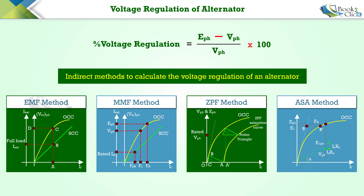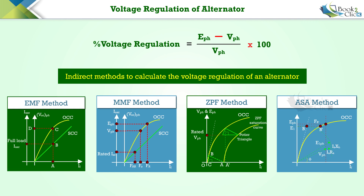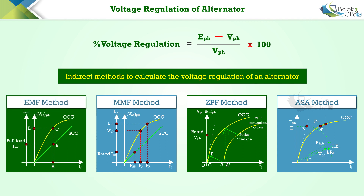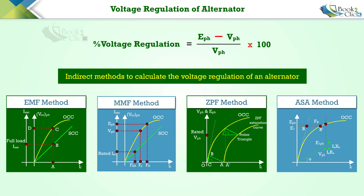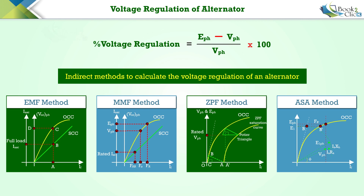There are a variety of indirect methods to calculate the voltage regulation of an alternator without connecting the actual load. They are: the EMF method or synchronous impedance method, the MMF method or ampere turn method, the ZPF method or zero power factor method, and the American Standards Association method. We have posted separate videos for each of these methods — watch them and enrich your knowledge.